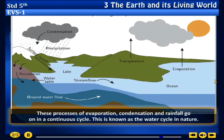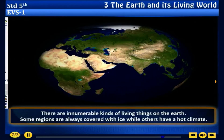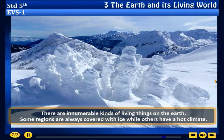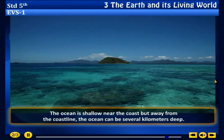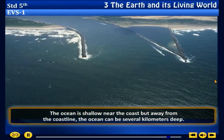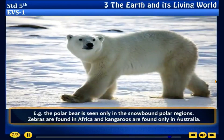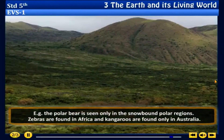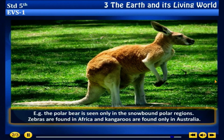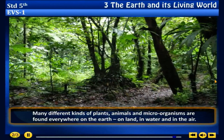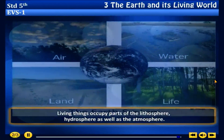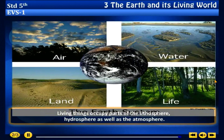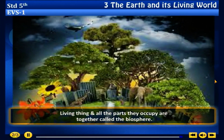The biosphere: there are innumerable kinds of living things on the earth. Some regions are always covered with ice while others have a hot climate. There are mountains in some places and plains in others. The ocean is shallow near the coast but can be several kilometers deep away from the coastline. For example, the polar bear is seen only in the snowbound polar regions; zebras are found in Africa and kangaroos only in Australia; elephants and lions are found in regions of hot climate. Many different kinds of plants, animals and microorganisms are found everywhere on the earth — on land, in water and in the air. Living things occupy parts of the lithosphere, hydrosphere as well as the atmosphere. Living things and all the parts they occupy are together called the biosphere.